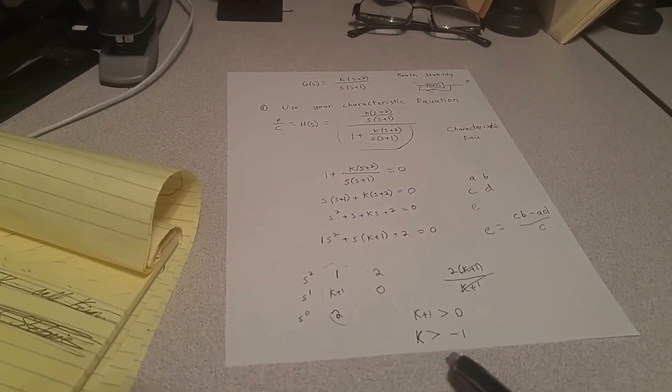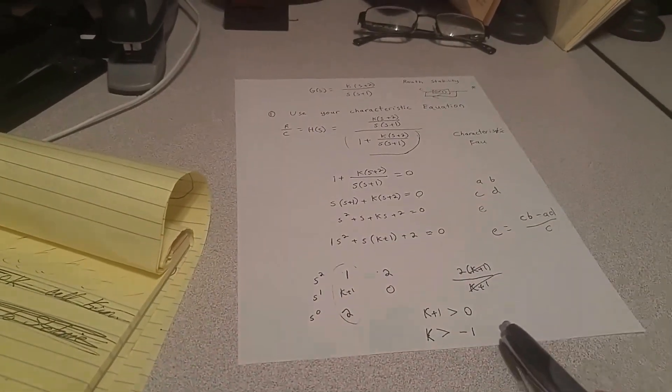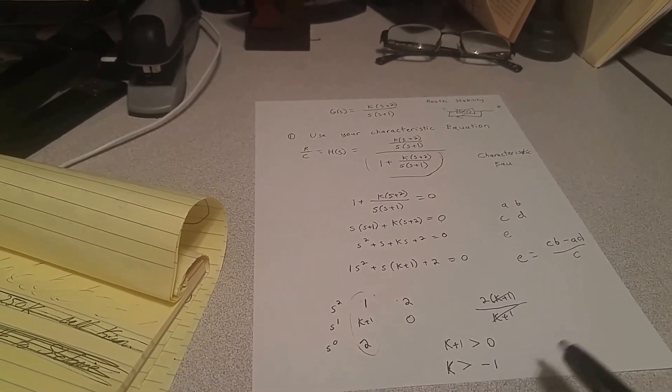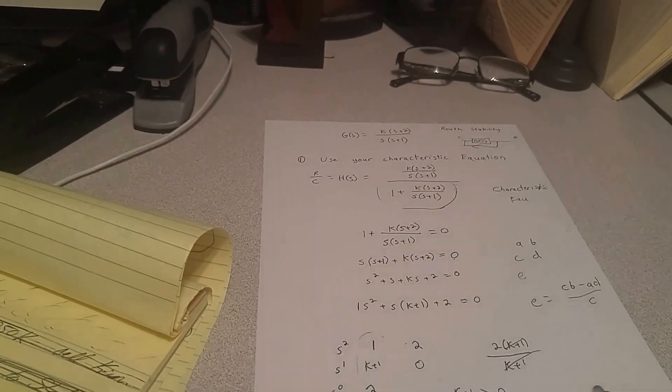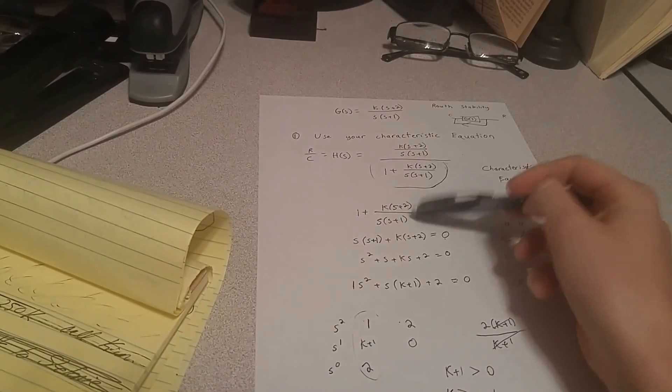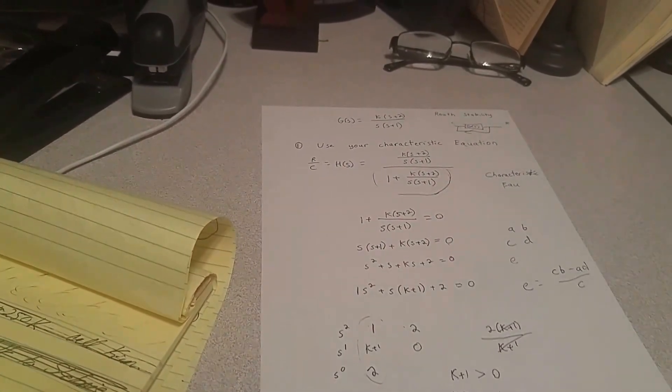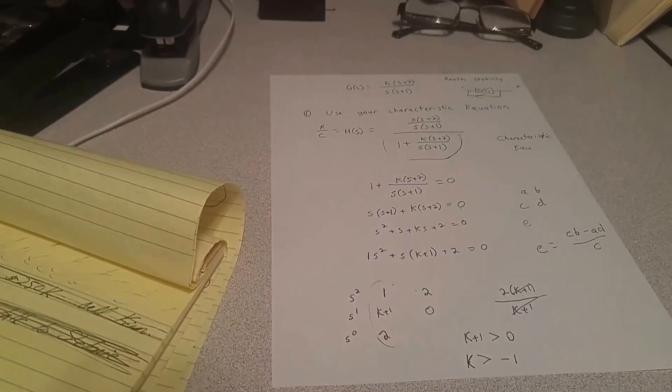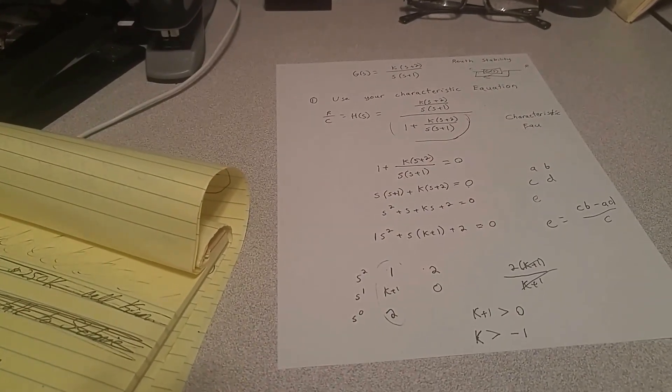But if k is equal to negative 1, you have marginal stability. If k is less than negative 1, then it's unstable because it creates a pole that sets this equal to 0, and then you have a pole in the right half plane and it becomes unstable. Let me know if you have any questions. Thanks for watching!